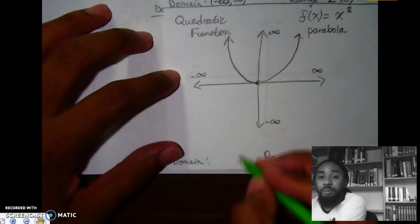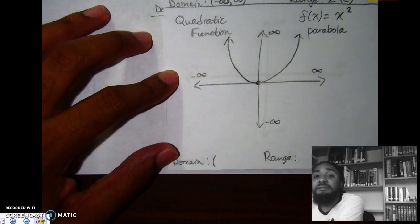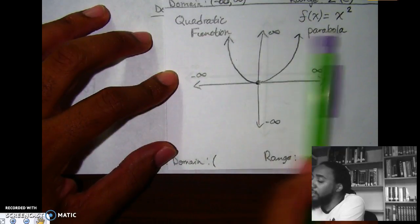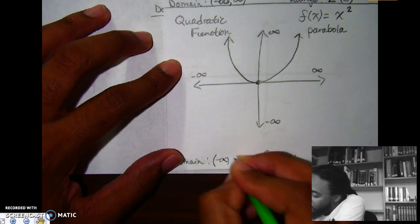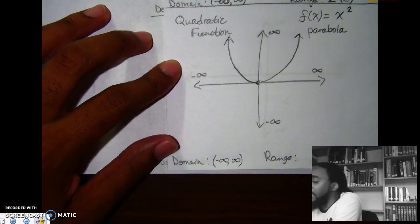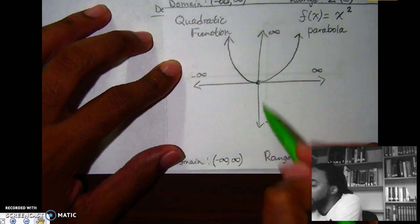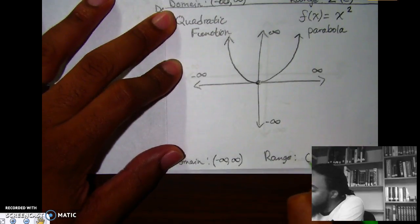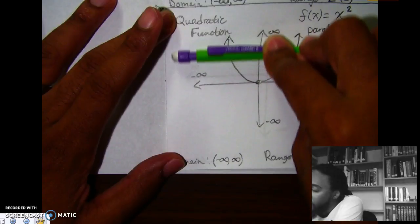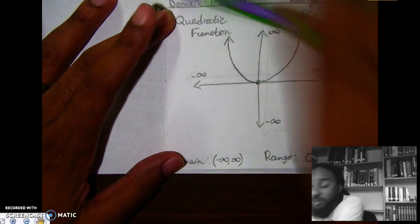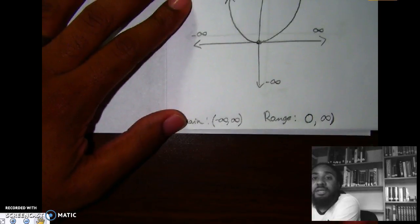For the domain of the quadratic, there's an arrow on both sides, so going from left to right it's negative infinity to positive infinity. For range, the graph doesn't start until we get to zero — there's nothing below zero — so from zero we go all the way up to an arrow, which means positive infinity.